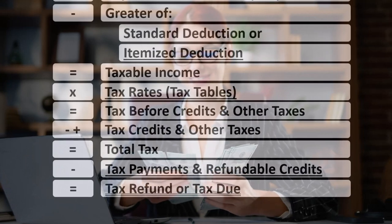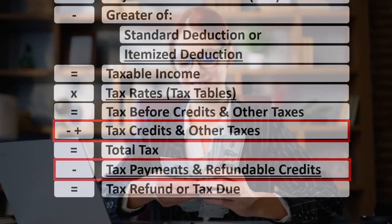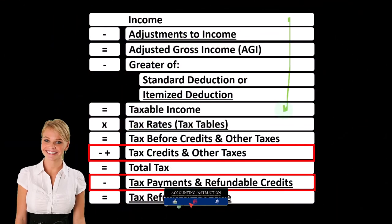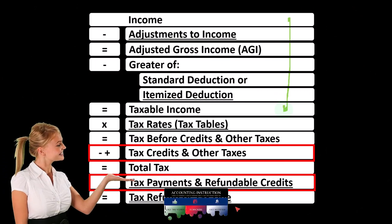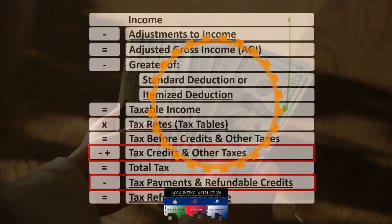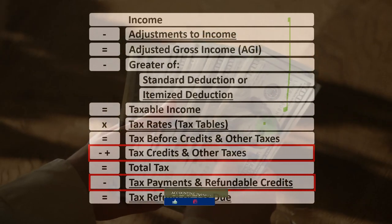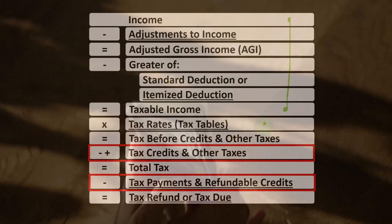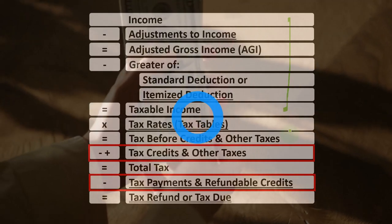Looking at the tax formula, we're at the bottom here looking at the credits area. Remember, the first half of the income tax formula is essentially an income statement, though a strange one. The bottom line is taxable income, similar to net income. We then calculate the tax on taxable income — not with a flat tax, but with a progressive tax system to get to the tax before credits and other taxes.